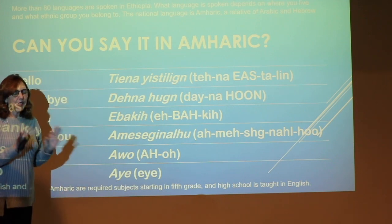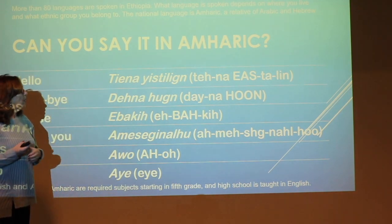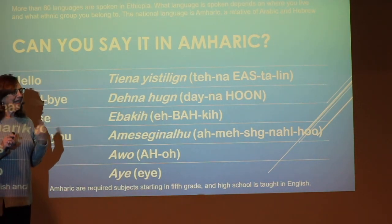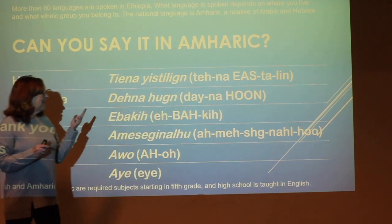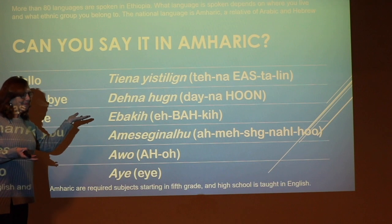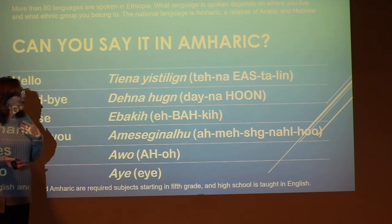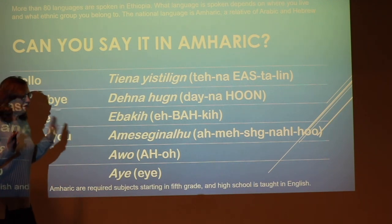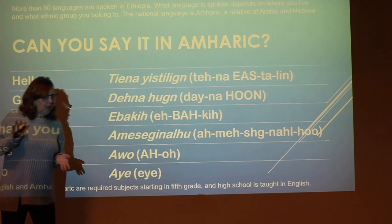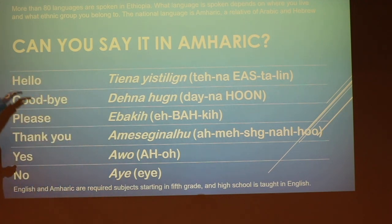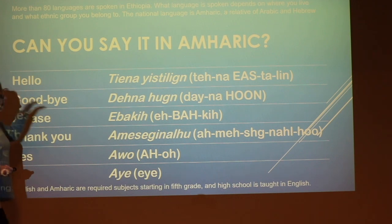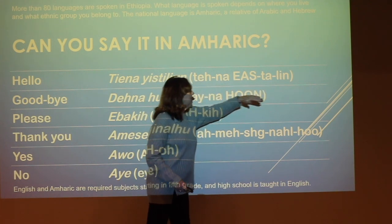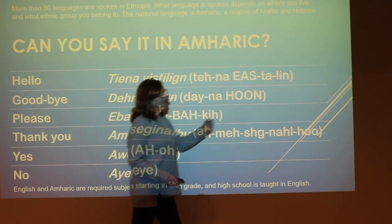The languages they speak there — there are over 80 languages spoken in Ethiopia, a lot of indigenous languages. But Amharic is the main language spoken. Since we already speak English, we're going to try the Amharic. Let's see if we can say it. Hello — we're going to sound it out with the syllables: Te-na-i-ste-len. Te-na-i-ste-len. Hello.